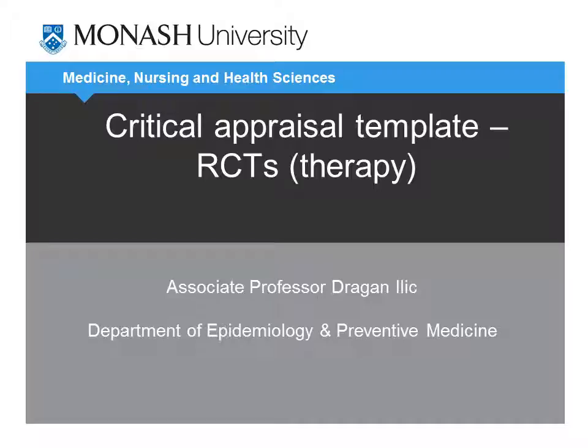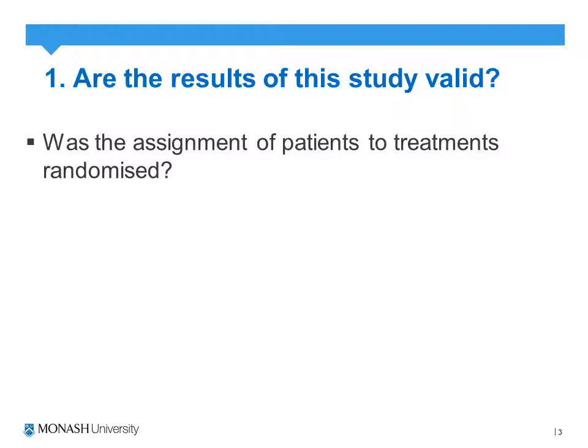Welcome to this online presentation in which we will discuss how to critically appraise randomised control trials, using questions from a specific template on critically appraising studies around therapy. There are a number of questions we'd want to ask, centring around three main areas: the methodology and whether results are valid, the actual study results, and the generalizability or applicability of the study to a specific patient.